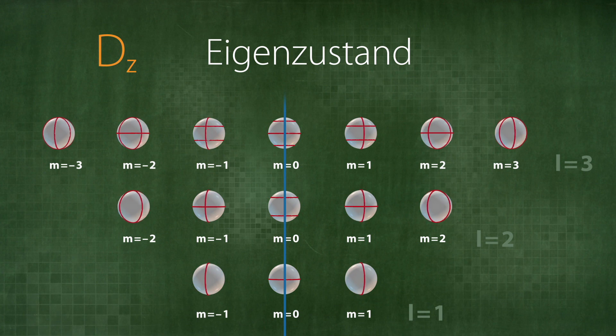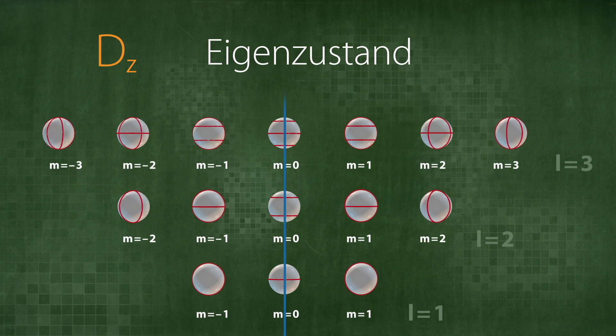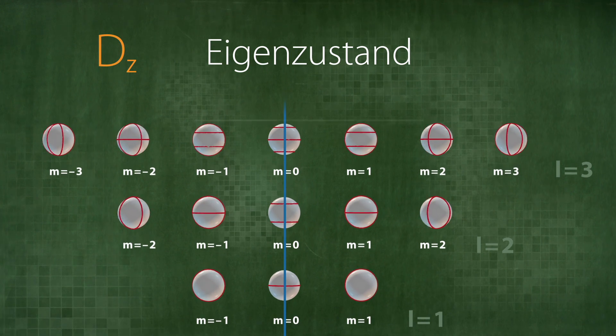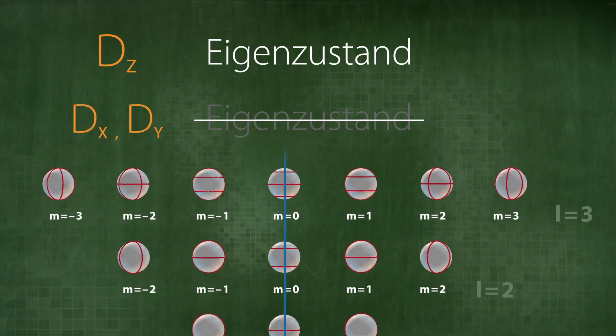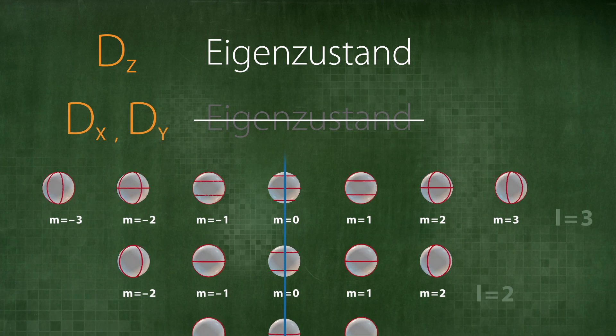We can only construct eigenstates with regard to rotations about one specific axis. In this example, we have selected the z-axis. These vibrational states on the sphere are therefore not eigenstates with regard to rotations about the x-axis or the y-axis.